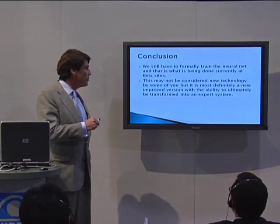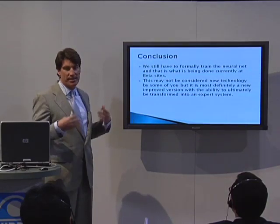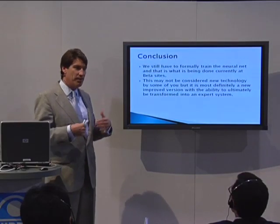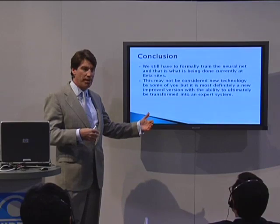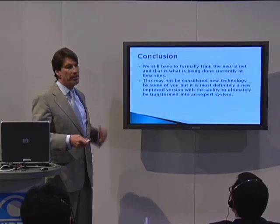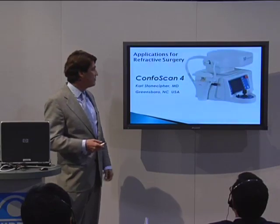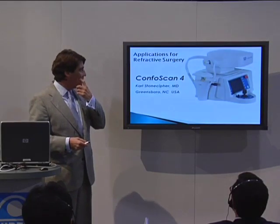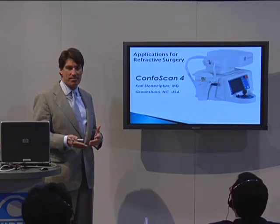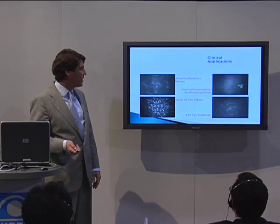We're still what I call beta sites — collecting data. Every now and then we'll take around 6,000 eyes, dump them, send them to Mike Smolek, and he puts them into the neural net to keep retraining it and giving it more and more accuracy. A lot of people think this is a purely diagnostic system with no applicability in their practice, but...